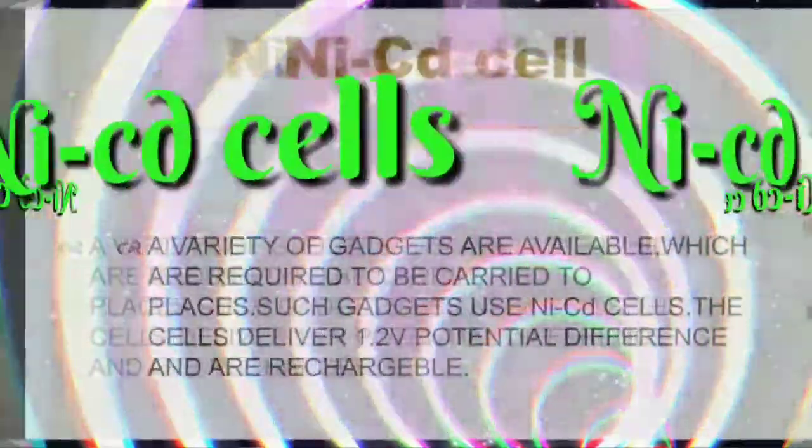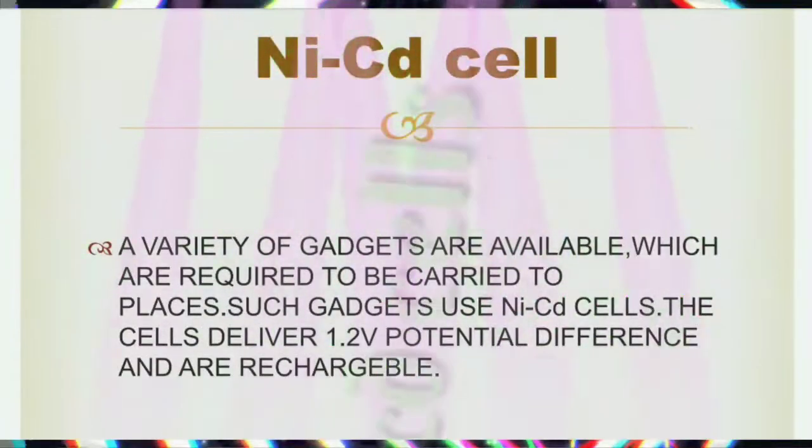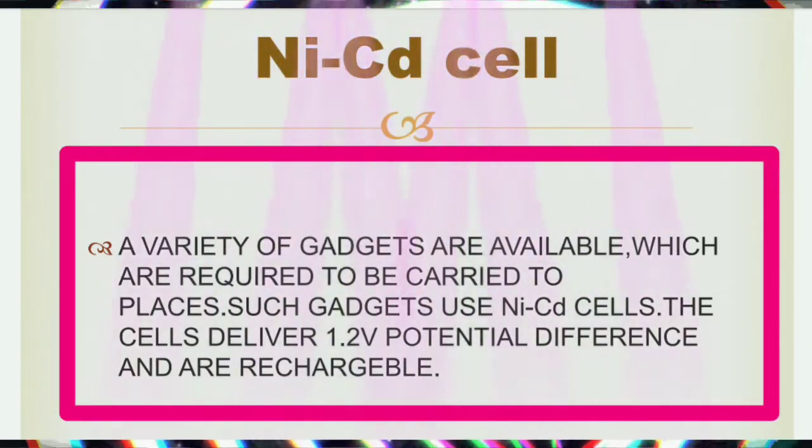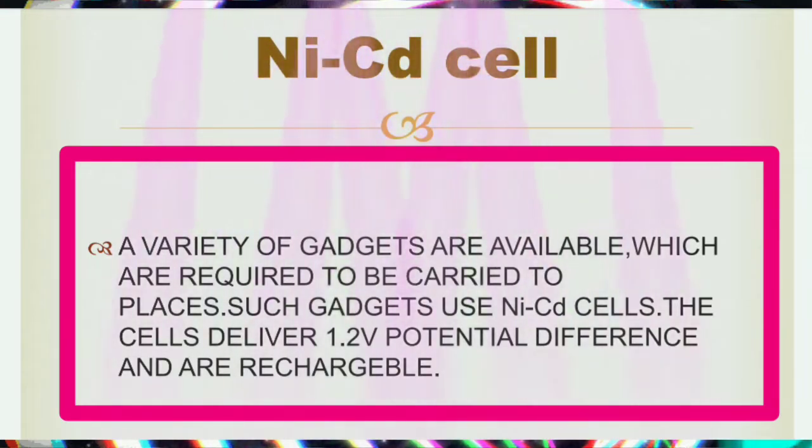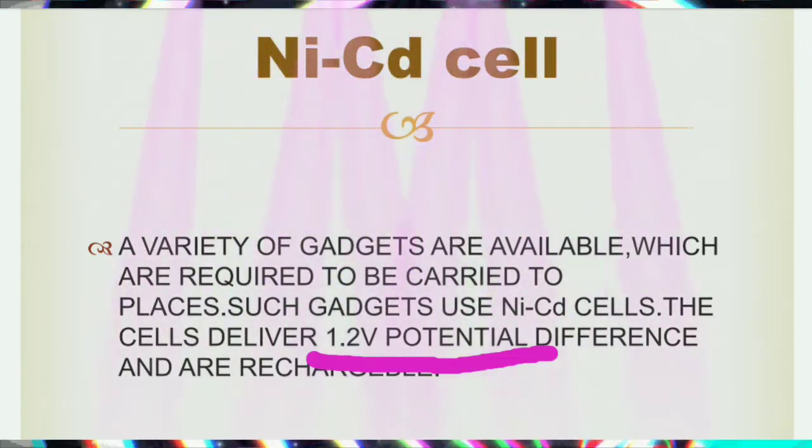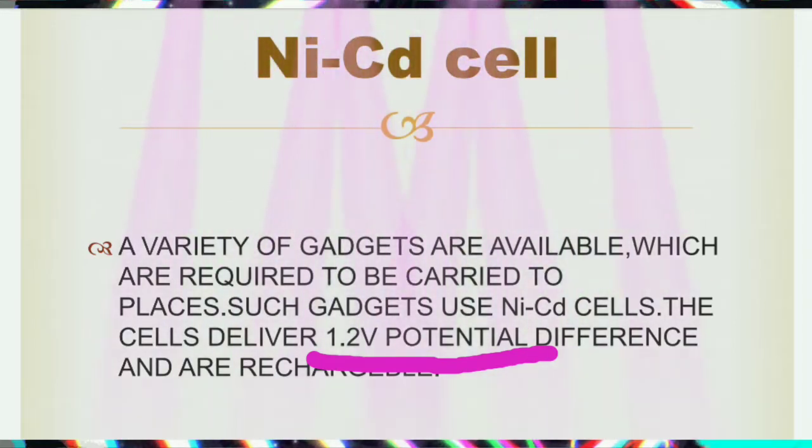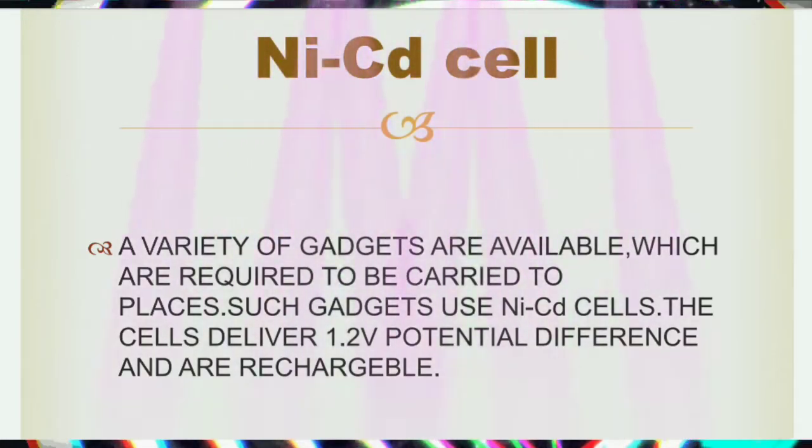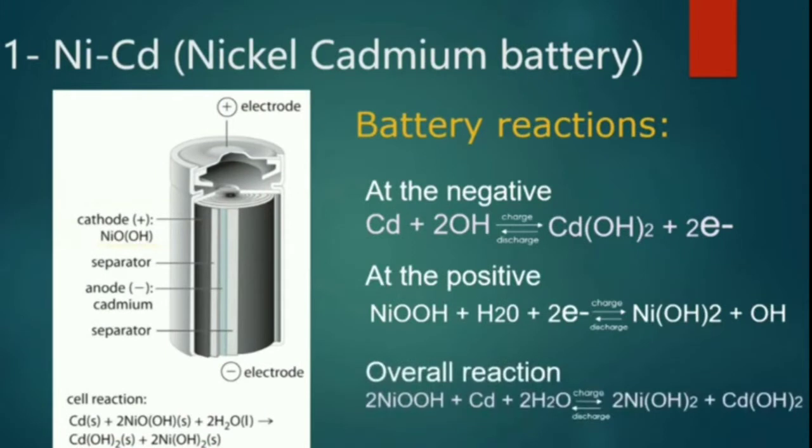Now let us move towards NiCd cells. This nickel cadmium cell. These days a variety of gadgets are available which are required to be carried to different places. Such gadgets use NiCd cells. The cell delivers 1.2 volts potential difference and are rechargeable. Means you can recharge them. See these students. This NiCd i.e. nickel cadmium battery. In that cathode are positive ions whereas anode are negative. Let us see the diagram.